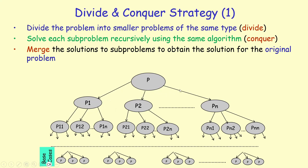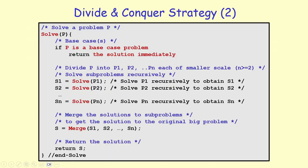Eventually we come to the original first recursive call P, where we obtain the solution to P1, the solution to P2, and the solution to Pn. What remains is merging the solutions to these subproblems to obtain the solution to the original problem P, and returning it from the function.